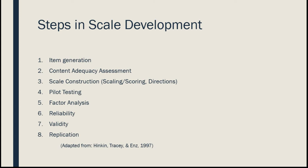These are the steps in scale development: we start with item generation, move to content adequacy assessment, then make a scale from the items we've developed. We resolve issues such as scaling and scoring, write directions for the instrument, pilot test it, do factor analysis, determine reliability and validity, and the final step is replication. Today I'll take you through that process in general terms.